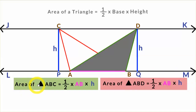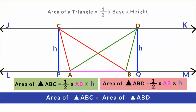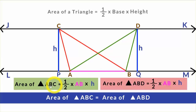So if you notice, the area of triangle ABC is half into AB into H, and the area of triangle ABD is also half into AB into H. This shows that the area of triangle ABC is equal to the area of triangle ABD. So now we know that triangles which have a common base — here, triangle ABC and triangle ABD have common base AB — and which are stuck in between two parallel lines JK and LM, are equal in area.